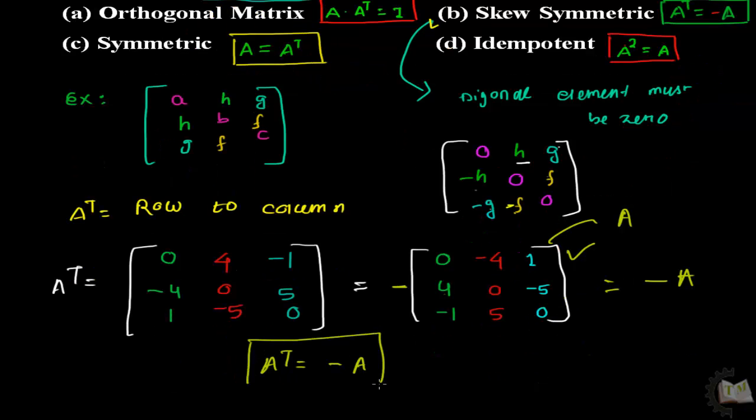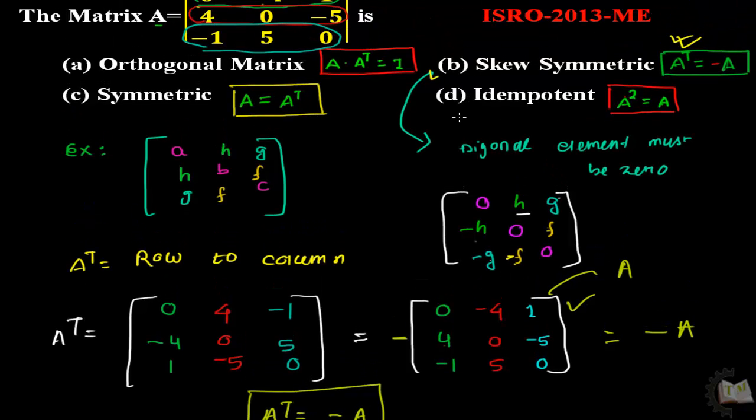We got A transpose equal to negative A. This is the skew-symmetric matrix. When this type of question is asked in the exam, do not check multiplication methods because it will take a lot of time. First analyze the options and find which is suitable for you. Remember to use the formula.